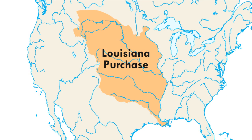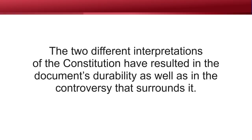If you want to get something done, you might want to look at the Constitution in a broad sense. If you want to stop someone else from doing something in the government, you should claim that it's unconstitutional — strict interpretation. Often, pragmatism took over those in power. Think of Thomas Jefferson and the Louisiana Purchase — a perfect example. Thomas Jefferson was always a strict constructionist until he became president, then he took a broad construction view when it came time to buy the Louisiana Purchase. The two spectrums of interpretation have resulted in the Constitution's durability as well as in the controversy that surrounds it.